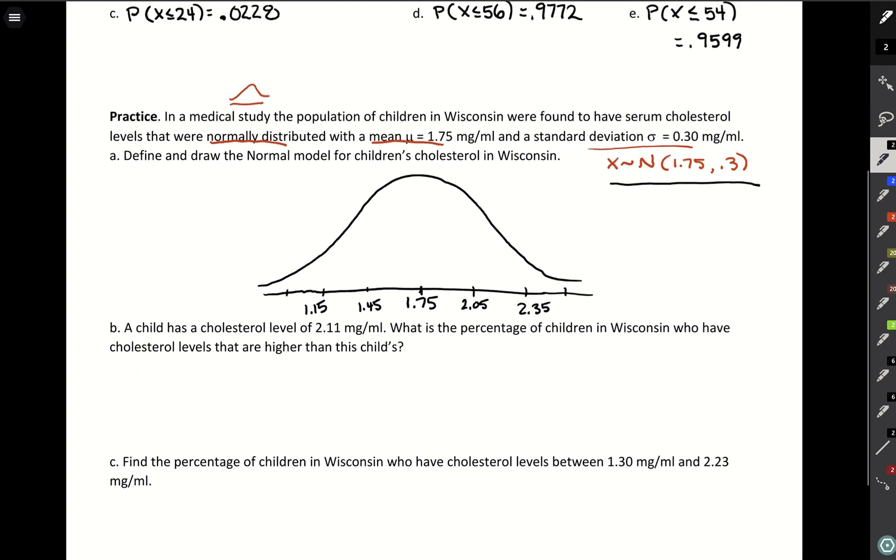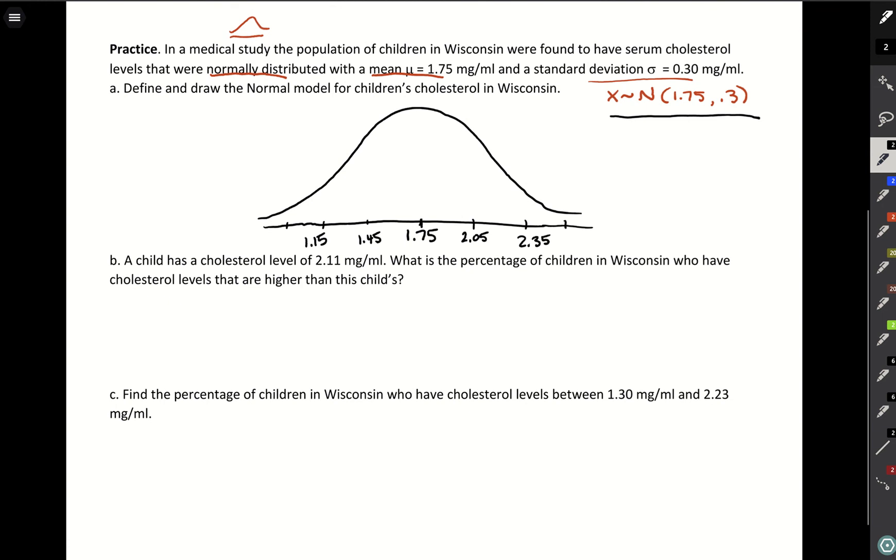A child has a cholesterol level of 2.11. You could get an idea of where they're landing. They're landing about here on our number line at 2.11. What is the percentage of children in Wisconsin who have cholesterol levels that are higher than this child's? We want to find this area to the right, to move up higher along that number line. So we're going to find the probability of our variable being larger than or equal to 2.11. To do this, we need GeoGebra.